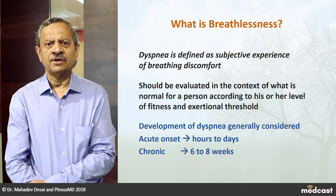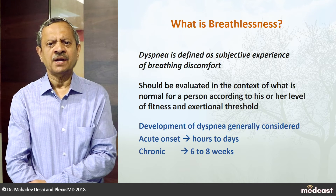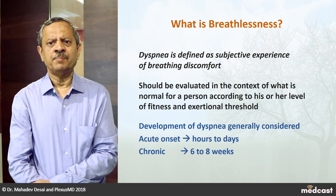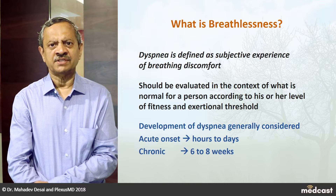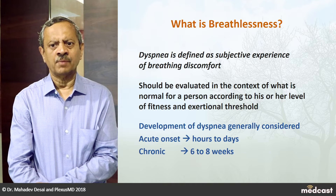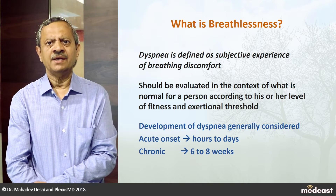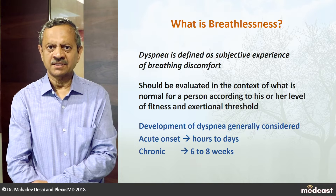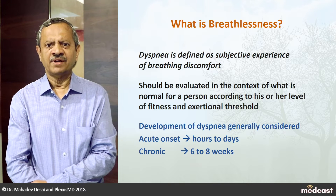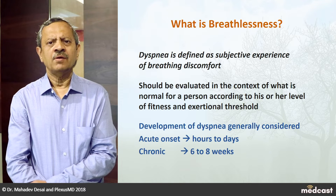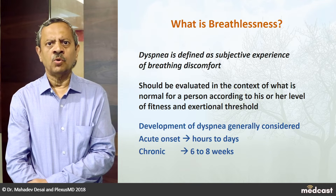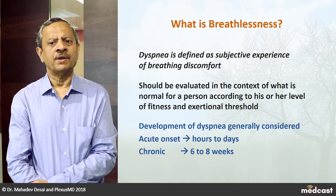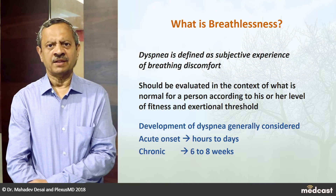Is it acute or chronic onset? Any breathlessness which has occurred over a period of few hours to days is regarded as acute onset breathlessness, while breathlessness that comes on gradually over six to eight weeks is called chronic onset breathlessness.